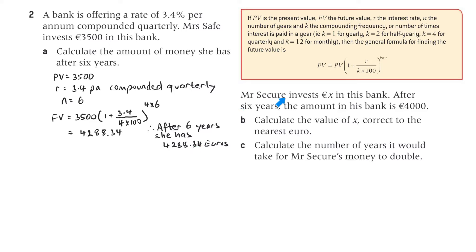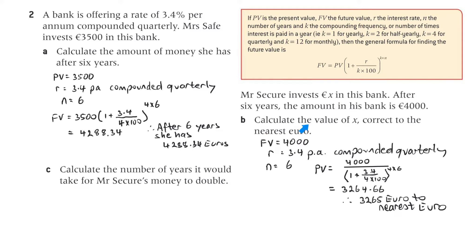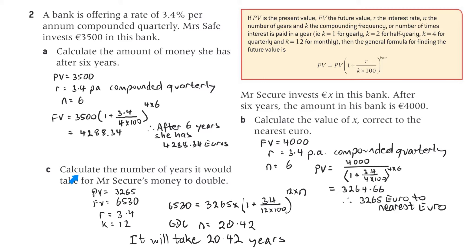Mr. Secure invests X Euro in this bank. After 6 years, the amount in his bank is 4,000. Calculate the value of X to the nearest Euro. We're trying to find the present value. The future value is 4,000. It's the same bank, so R is 3.4 per annum compounded quarterly, meaning K is 4. N is 6. Making PV the subject, we get 3,265 Euro. We then use this answer because the next part asks for the number of years it would take for Mr. Secure's money to double, so the present value is 3,265 and the future value is double that.